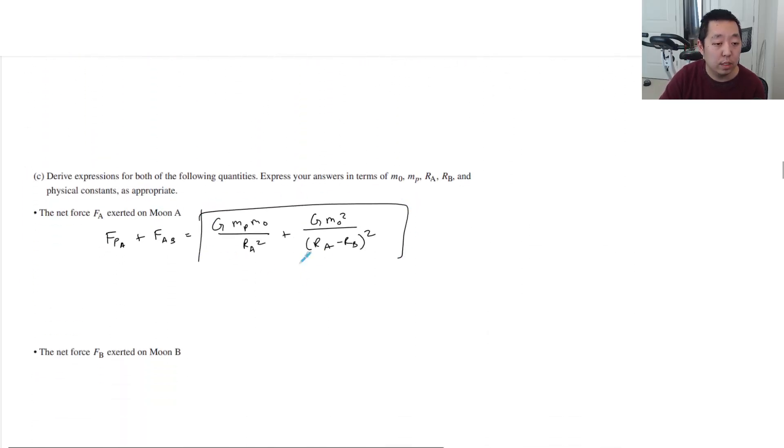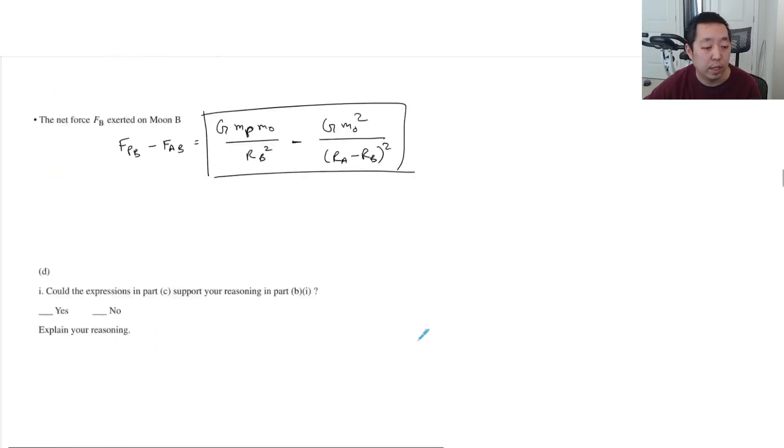And then this one is going to be the planet on B minus FAB. And so that would be GMP M0 over RB squared. Oh no, minus, because the FAB is going in the other direction. So minus. And then this is the same force, just in the minus direction. Same force as this one, just left, right? And that's planet B.